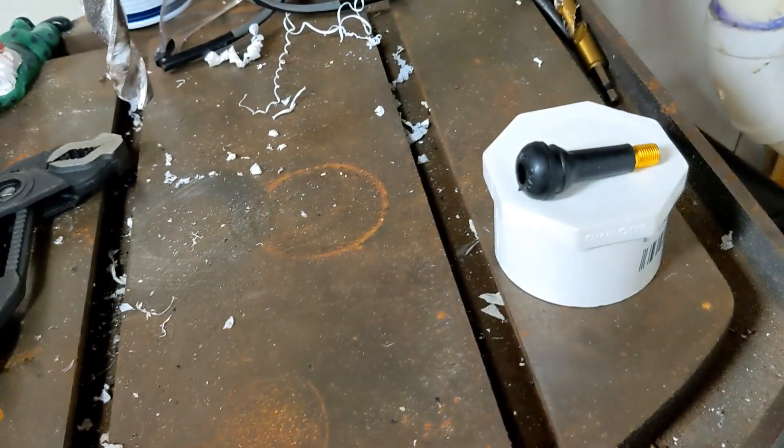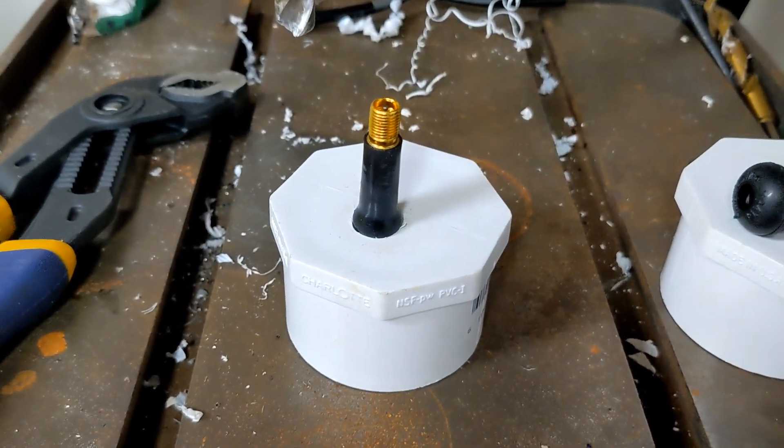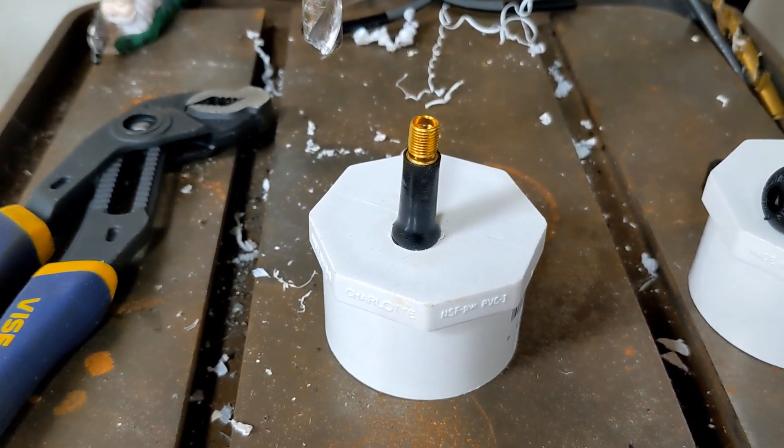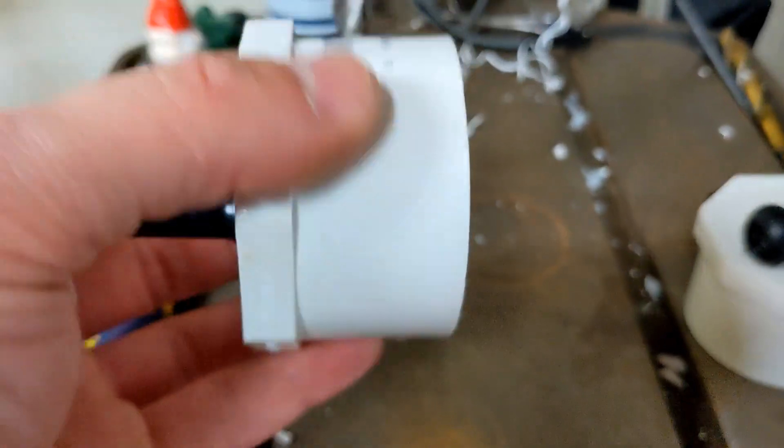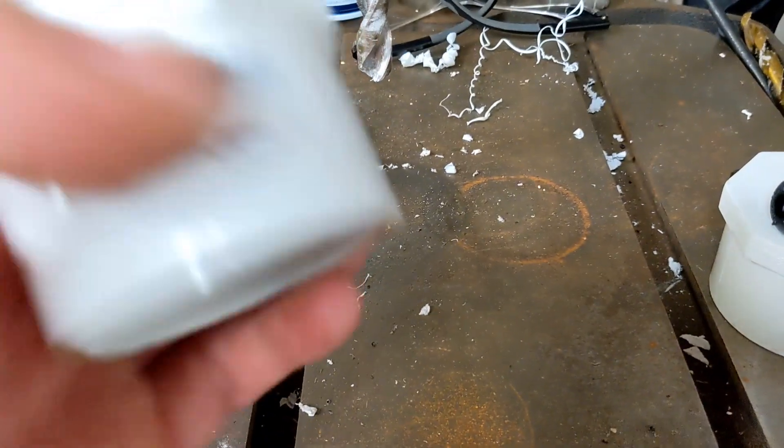And you have a boost leak tester. So for the Duramax you need a two inch PVC plug. For any other vehicle you could do this the exact same way, you just need to know the diameter of the coupler that you're going to hook this up to.